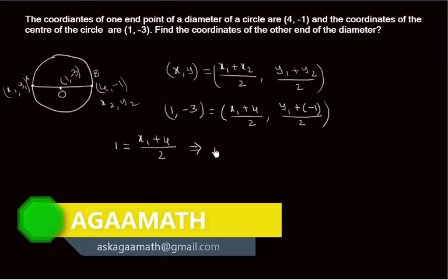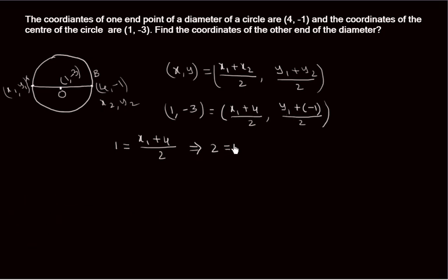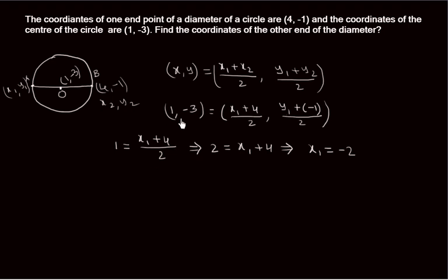Transferring the 2 to the other side: 2 = x1 + 4. To find x1, transfer 4 to the other side: x1 = 2 - 4, therefore x1 = -2. So this is the value of x1.